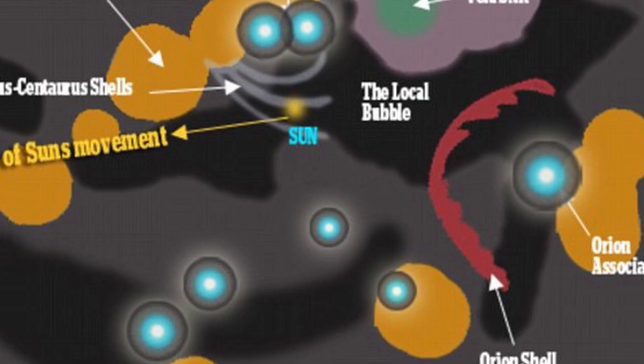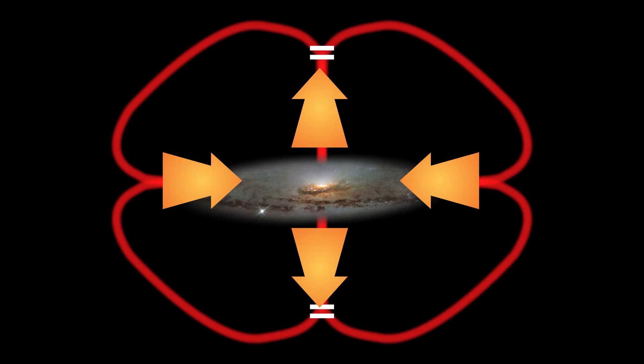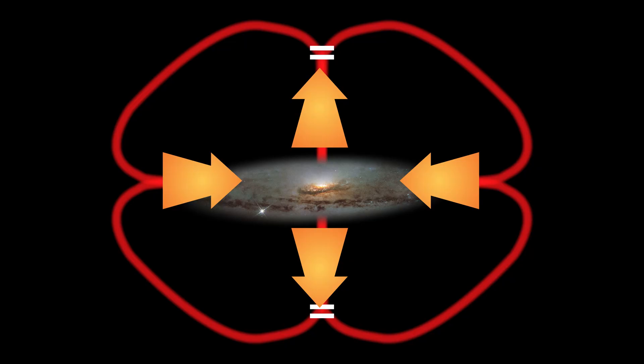The most important thing to remember in Alvin's galactic circuit is that the current flows out from the poles and back in via the plane of rotation.